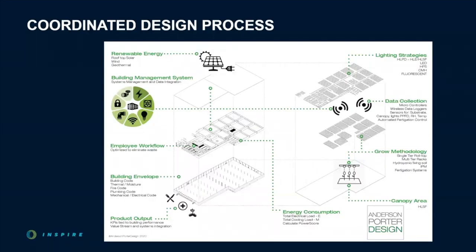Indoor cannabis and horticulture projects are extremely complex, and in a way we're constructing an entire campus in nearly every building that's purpose-built or retrofitted for indoor cultivation. Looking at this process map, courtesy of Anderson Porter Architects, you can see why they're so complex. Labor is one of the largest operational costs, so employee workflow is central to an optimized facility. In addition to that, you have lighting strategies, canopy area, cultivation methods and technologies, building envelope design, energy consumption, building management systems for data collection and control, maybe even on-site renewable energy and microgrid controls — all of which need to come together in harmony to meet your product output goals and business KPIs.